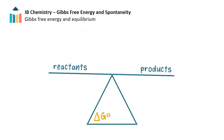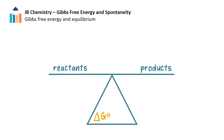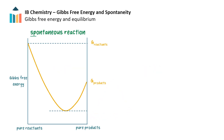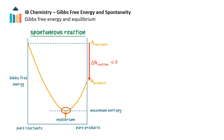Gibbs free energy change is also related to the position of an equilibrium — in other words, to the relative quantities of reactants and products in the equilibrium mixture. Delta G standard is related to the equilibrium constant. For a spontaneous reaction, when delta G is negative, the free energy decreases over time as the reactants change to products, until it reaches a minimum value. At this point, the reaction is at equilibrium. The system's entropy is maximized at equilibrium, for a constant temperature and pressure, because the system has achieved the highest distribution of energy and particles.